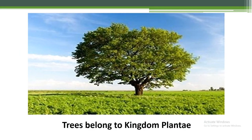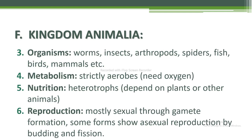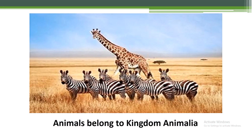Next is kingdom Animalia. This is the most diverse group of organisms — eukaryotic, multicellular, and dependent on plants and other animals for food. Animalia is further classified broadly into non-chordates and chordates. Domain is Eukarya. Cell type: eukaryotic and multicellular. Organisms include worms, insects, arthropods, spiders, fish, birds, and mammals. Metabolism: strictly aerobic. Nutrition: heterotrophs dependent on plants or other animals. Reproduction: mostly sexual through gamete formation; some forms show asexual reproduction by budding and fission. These are animals belonging to kingdom Animalia as shown in the figure.